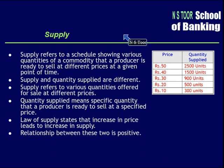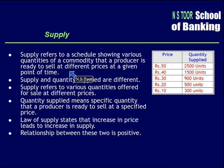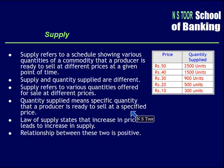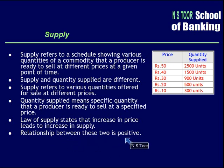To recapitulate: supply refers to a schedule that shows various quantities of a commodity that a producer is ready to sell at different prices at a given point of time. Supply is a general concept — various quantities at different prices. Quantity supplied is a specific concept — a specific quantity which a producer is ready to sell at a specified price. According to the law of supply, an increase in price leads to an increase in supply, meaning there is a positive relationship between the two.